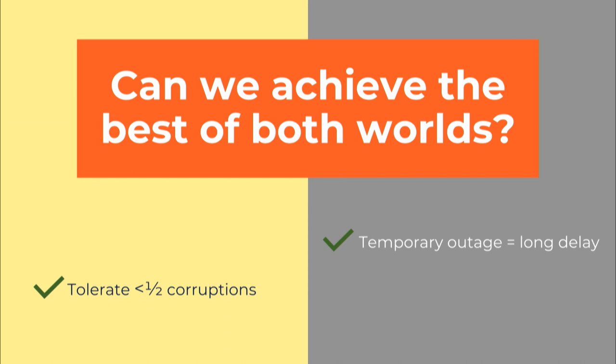We don't want to give up, so we ask: can we achieve the best of both worlds? Given classical insights the answer should be no, but if you think about it a little bit longer perhaps this is not a hopeless case. Who says synchrony is a binary attribute? Who says the network has to be either synchronous or not synchronous at all? And who says partition tolerance has to be binary — that a protocol has to be either partition tolerant or not at all? Partially synchronous protocols are said to be partition tolerant.